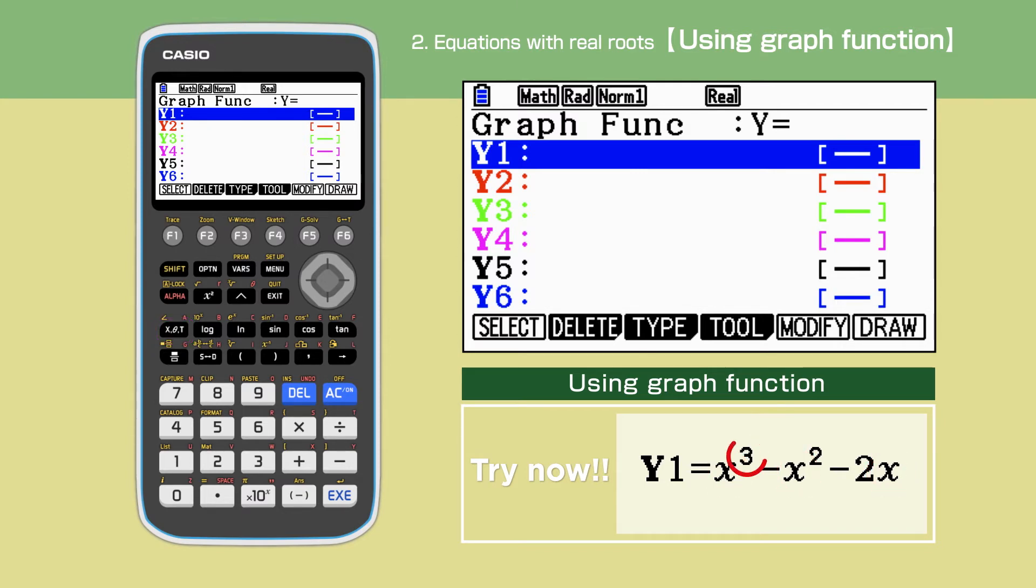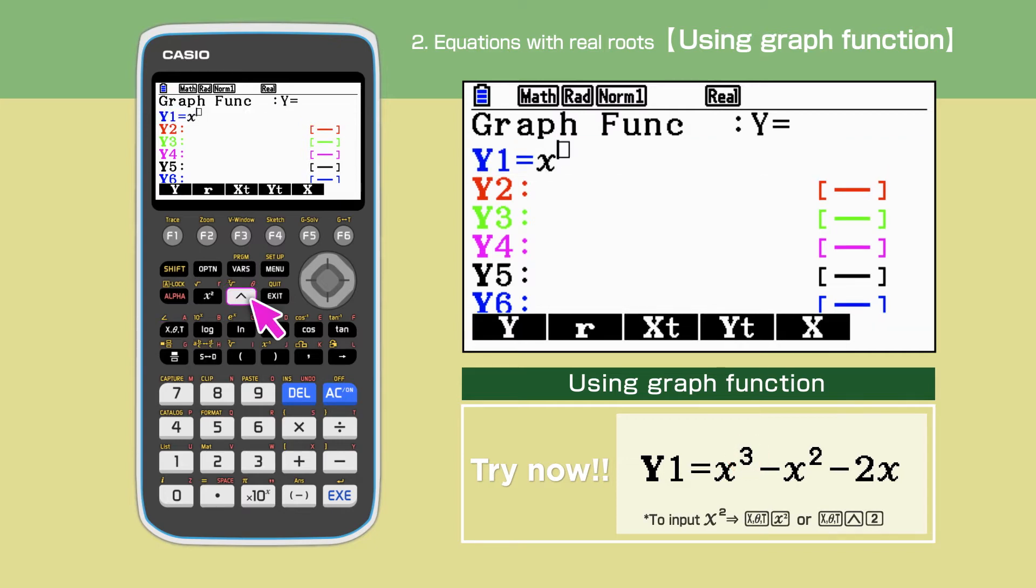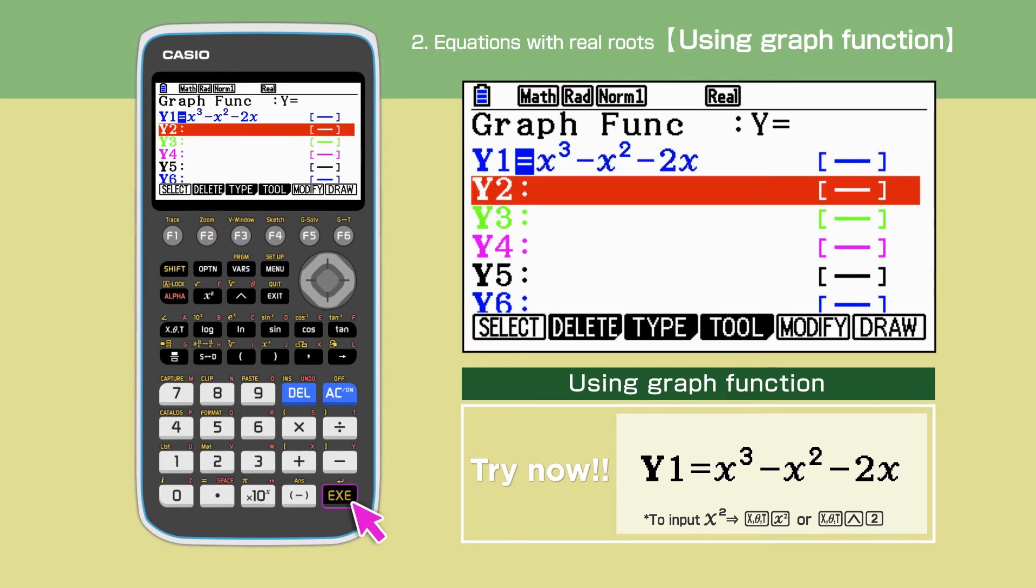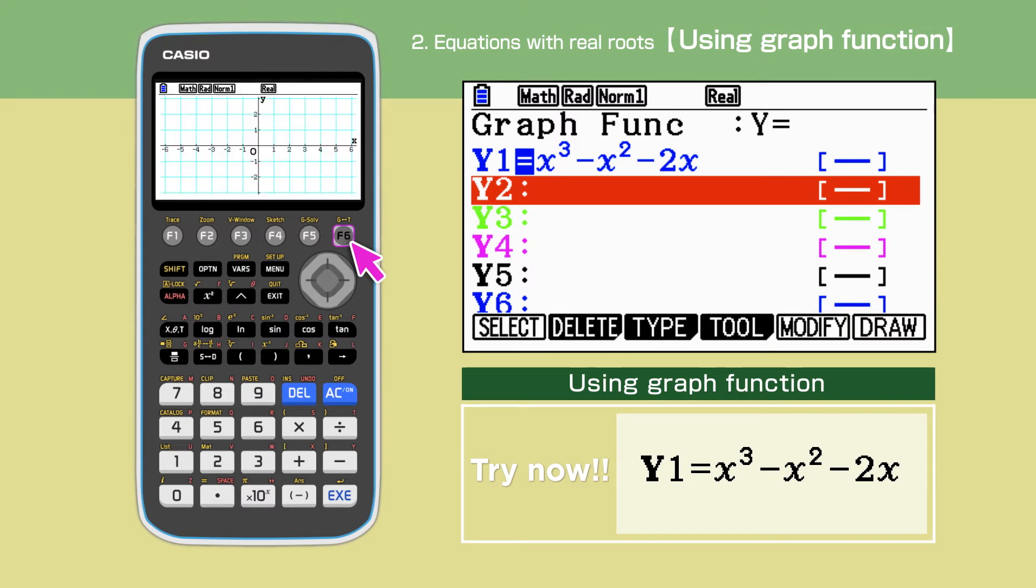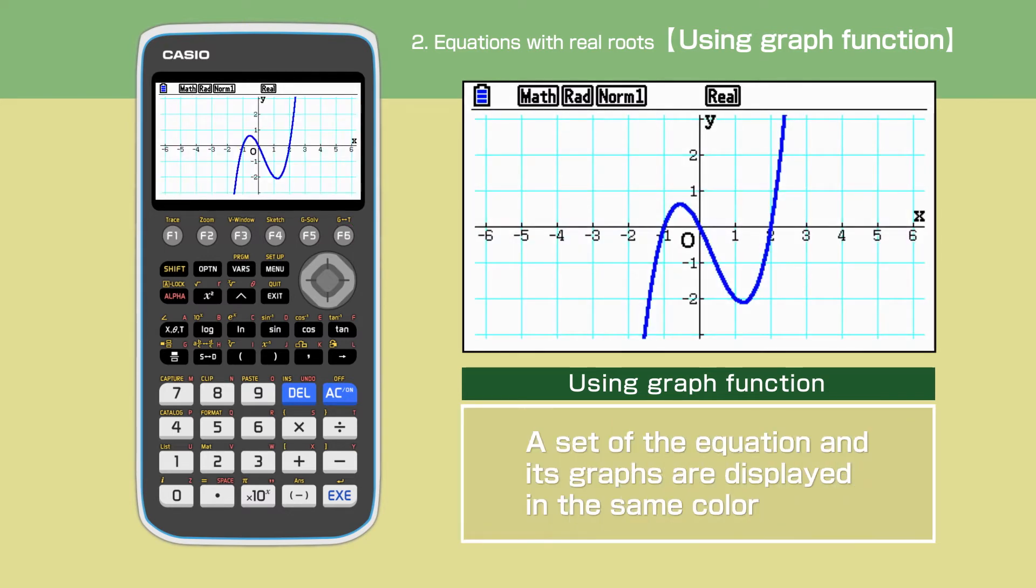To get the power of 3, we will need to press the at key. Press x6 to draw the graph. The graph is drawn.